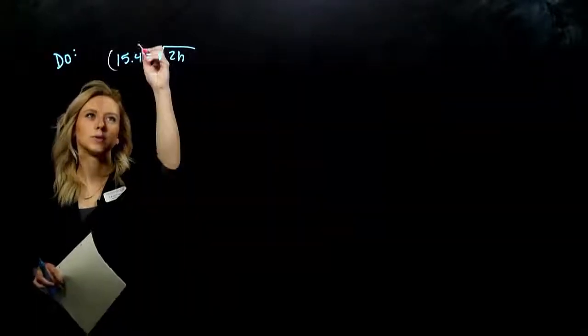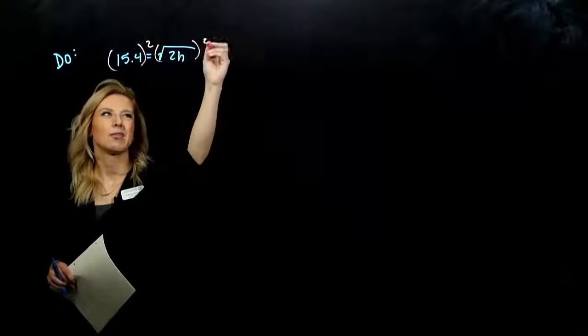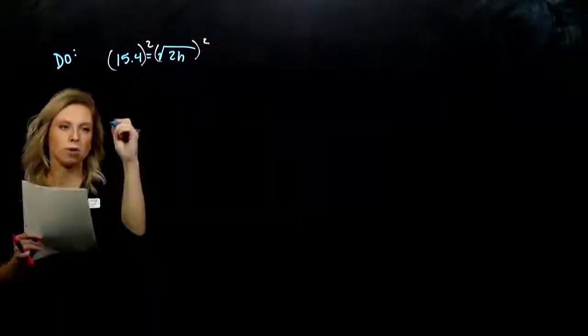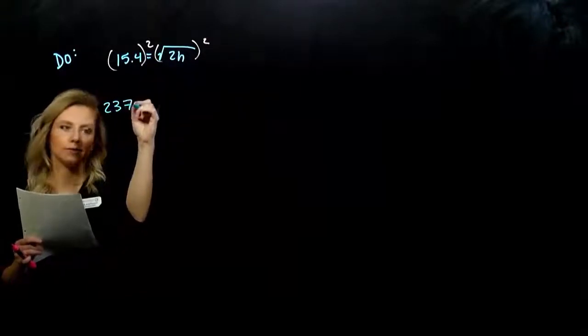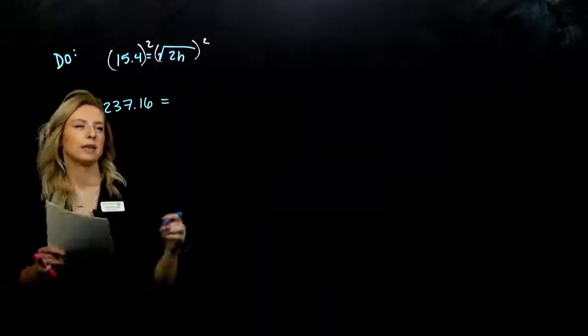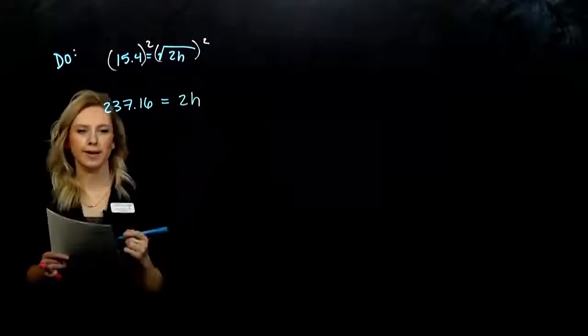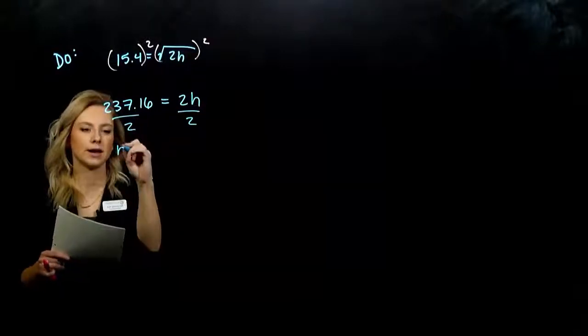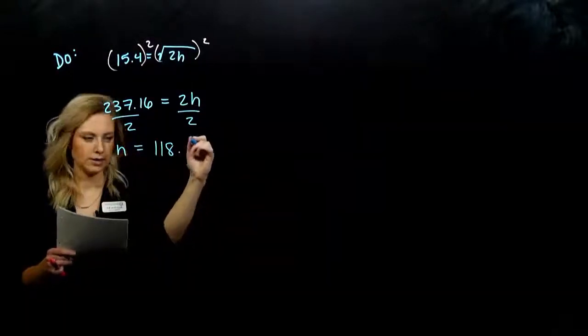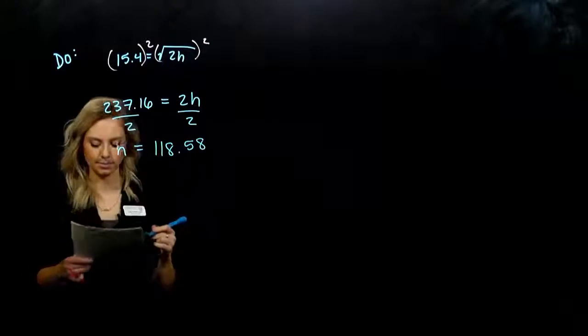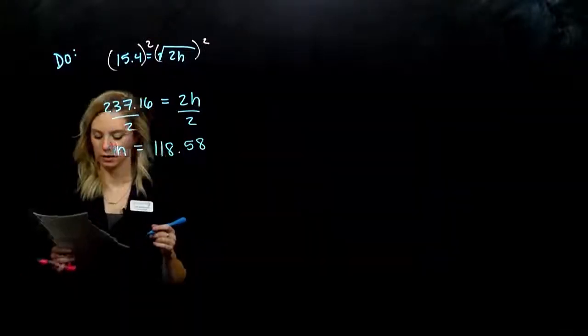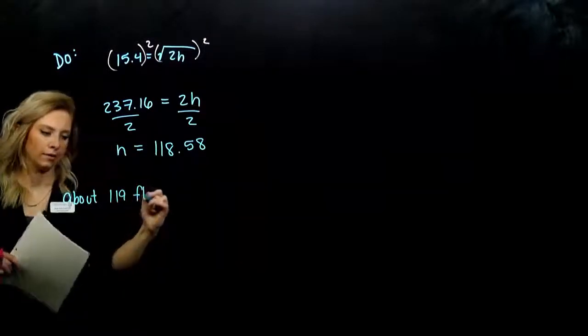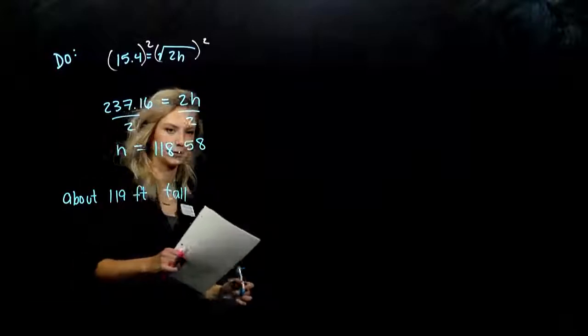So to start solving, we've got to square both sides, get rid of that radical. We need to dig out h. 15.4 squared is 237.16, and that is equal to 2h now. So dividing by 2 on both sides, h is equal to 118.58. And again, we can use a calculator. So how high is he up? About 119 feet tall is that ranger station.